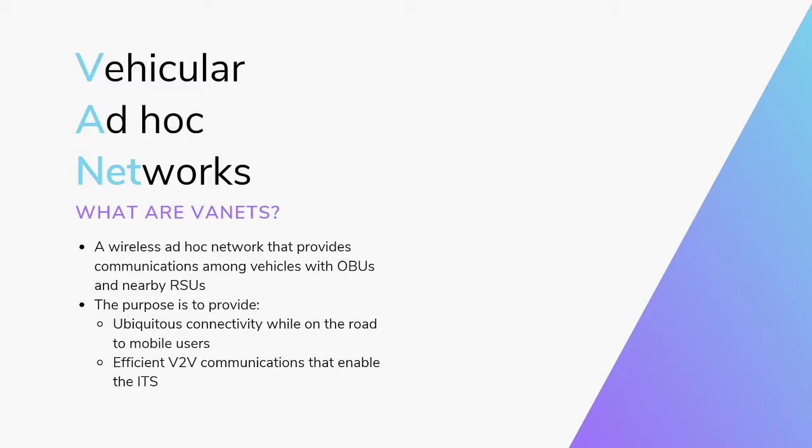The purpose of a VANET is to provide ubiquitous connectivity while on the road with mobile users and give efficient vehicle-to-vehicle communications that enable our Intelligent Transportation System, also known as ITS. VANETs differ in size, the speed of the vehicles and the relevance of their geographic positions, and they also have sporadic connectivity.